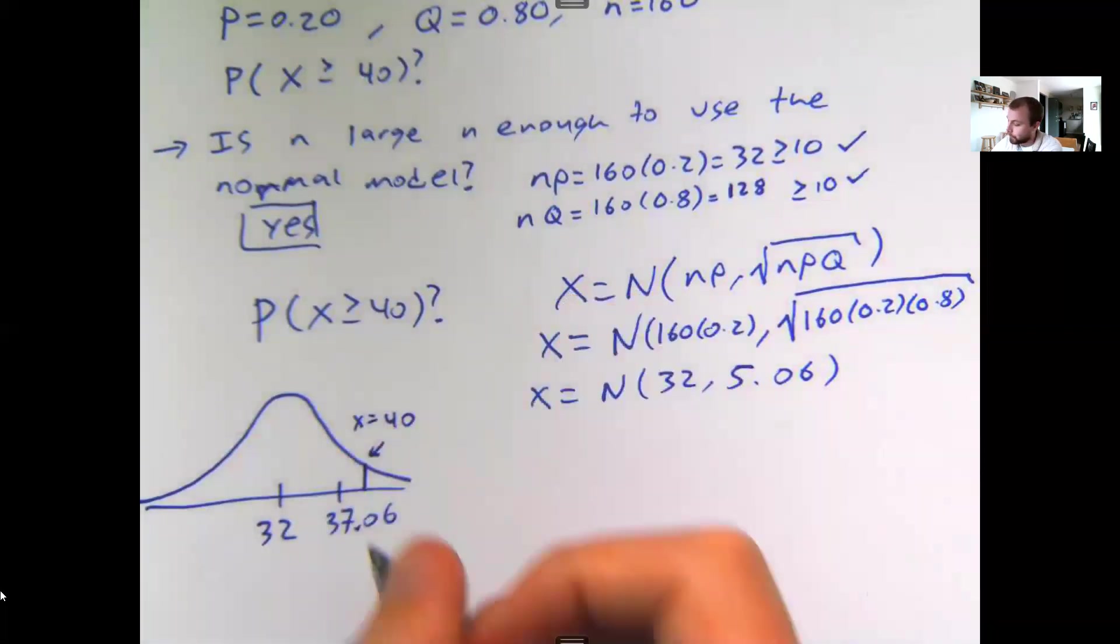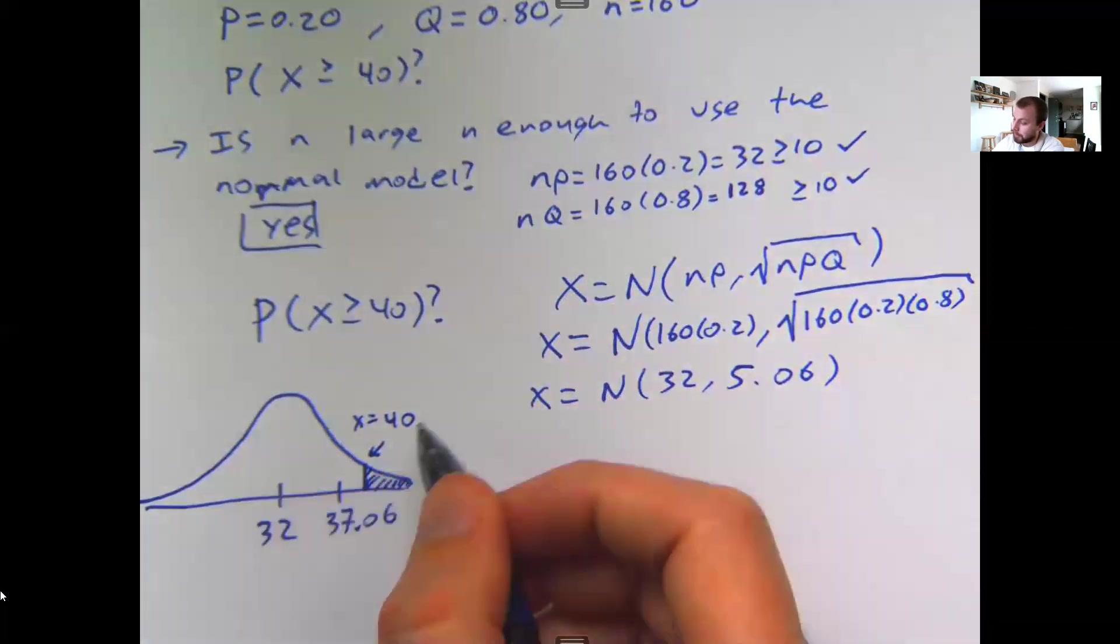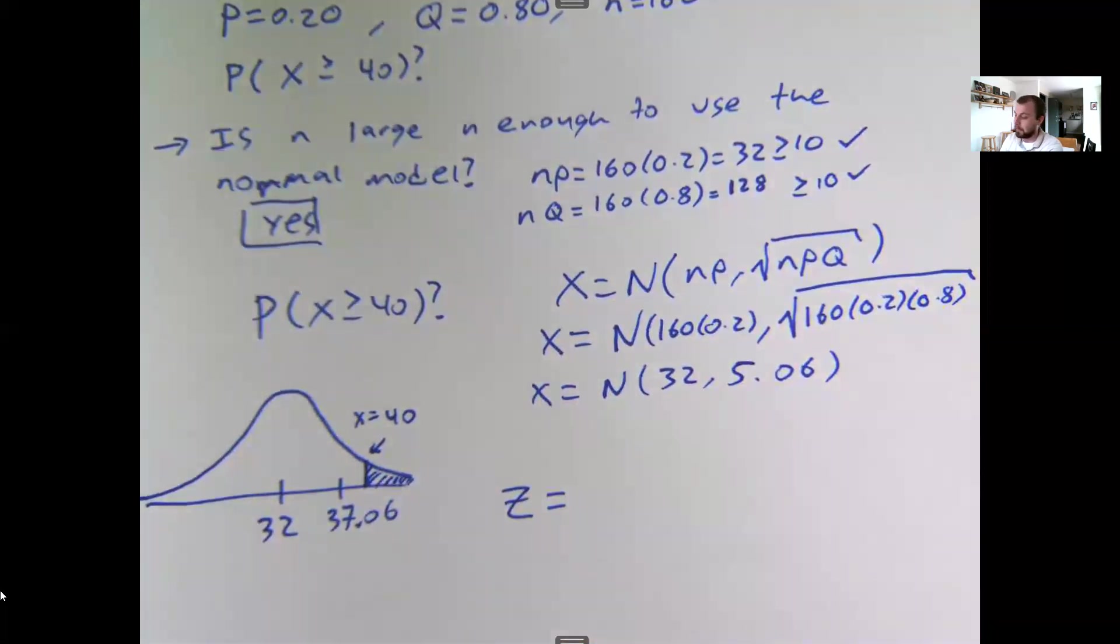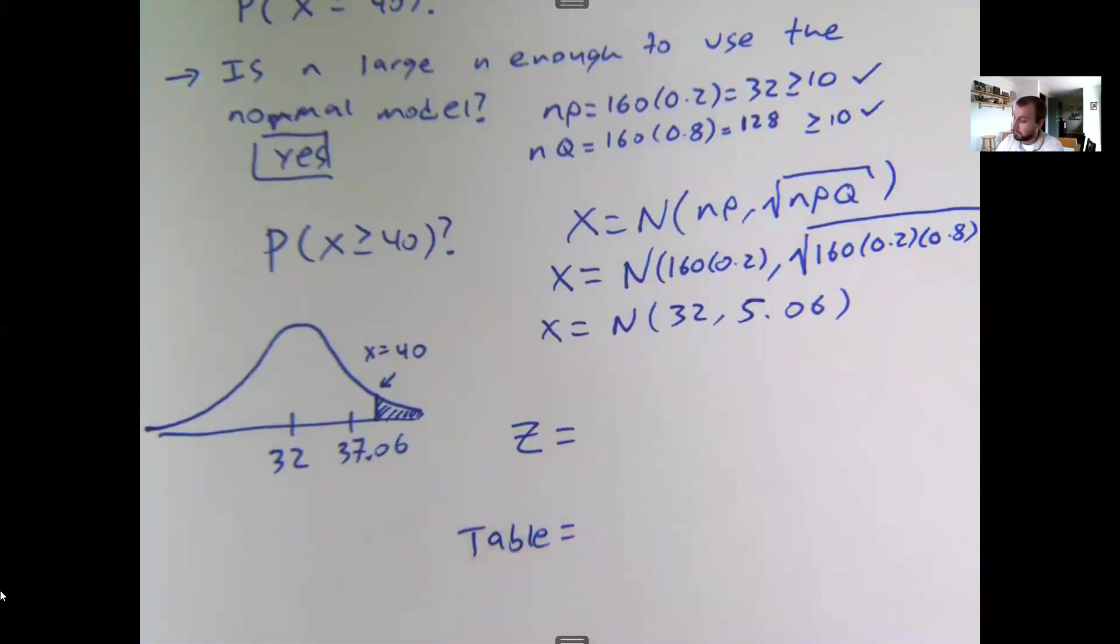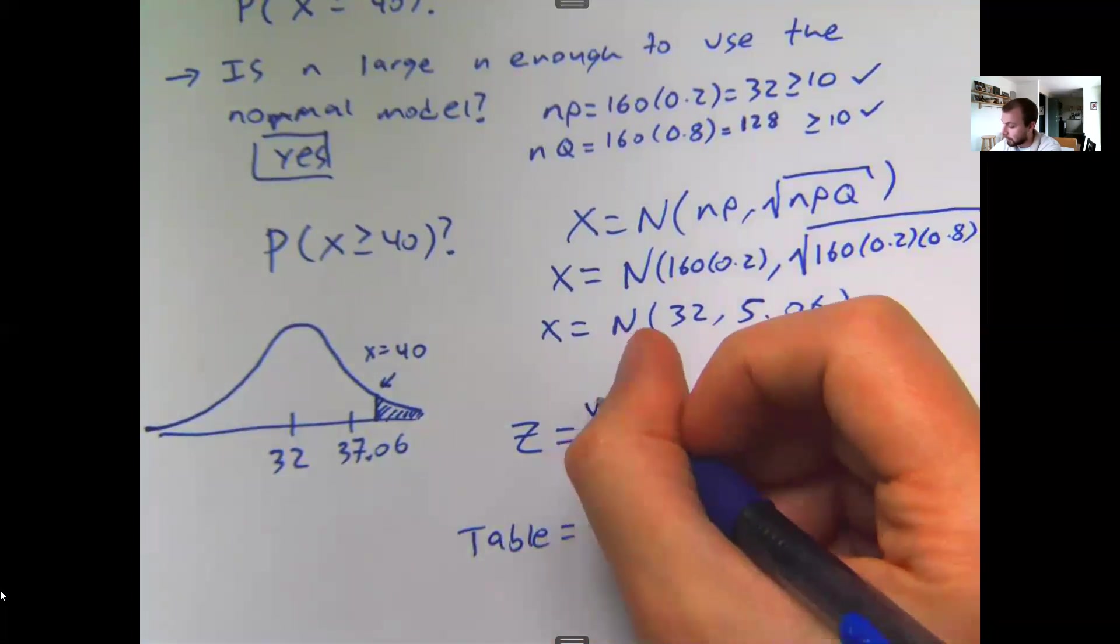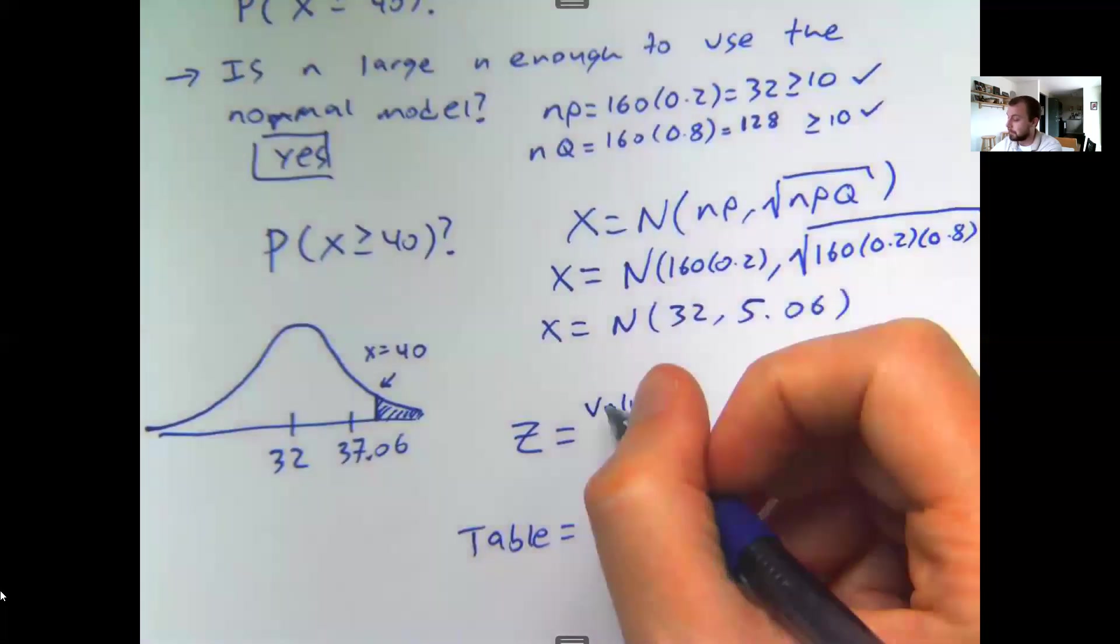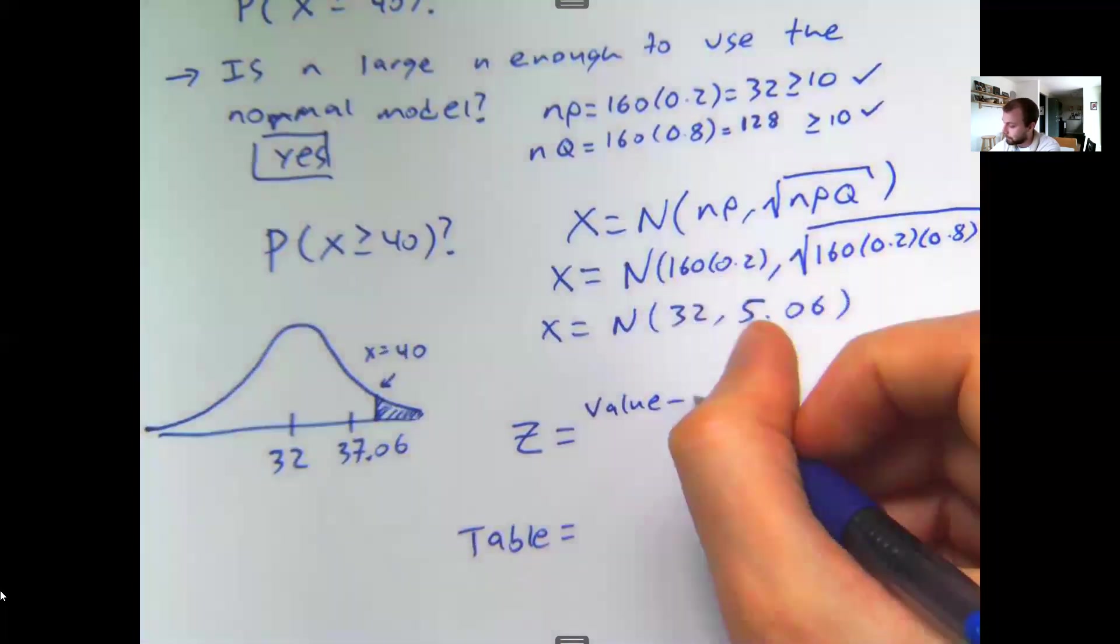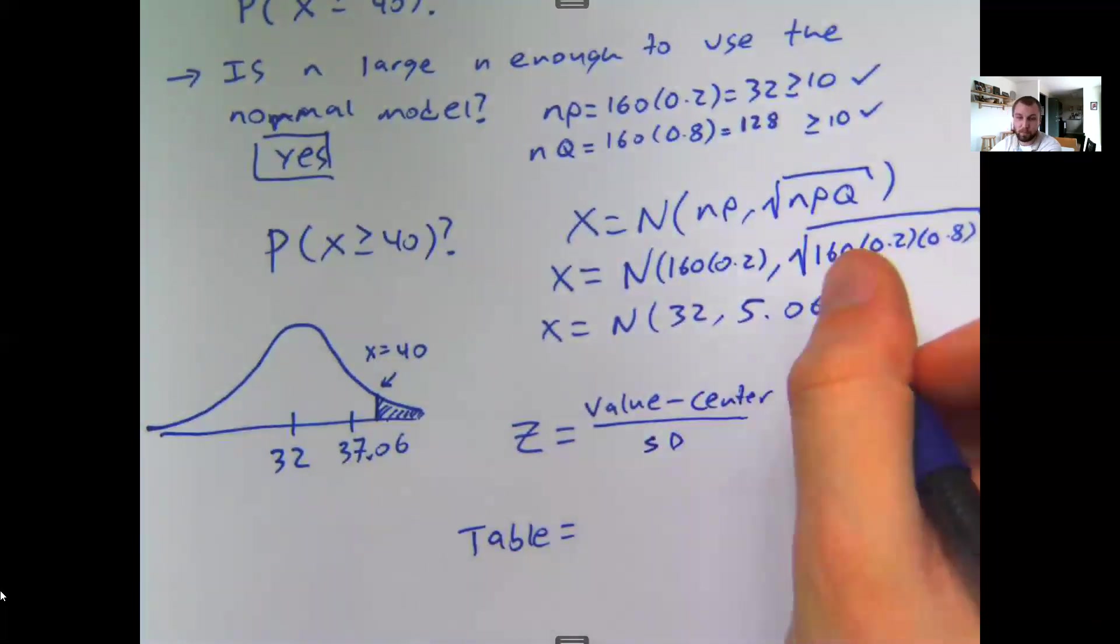So I have my model, I've drawn my picture, I'm going to find my z-score. And then I'm going to look that z-score up using either a table or technology, whatever you're comfortable using. To find the z-score, you're going to take the value that you care about. This is true for any normal distribution, it's going to be the same setup. You're taking the value that your question is about, minus whatever the center is for your model, divided by whatever the standard deviation is for your model.